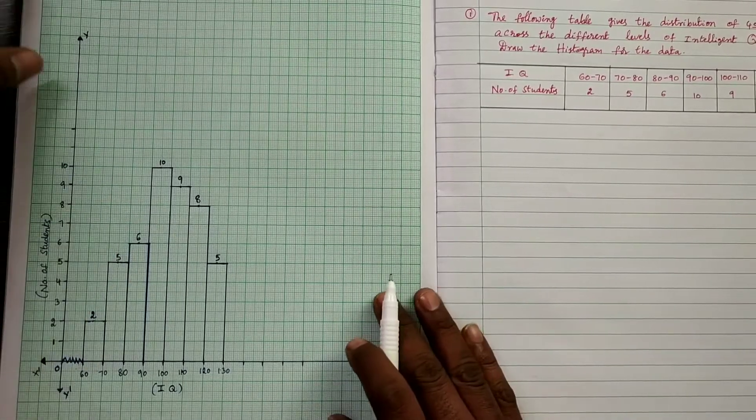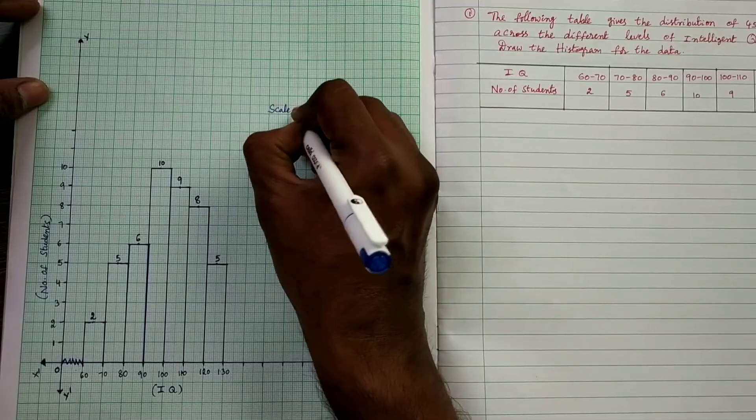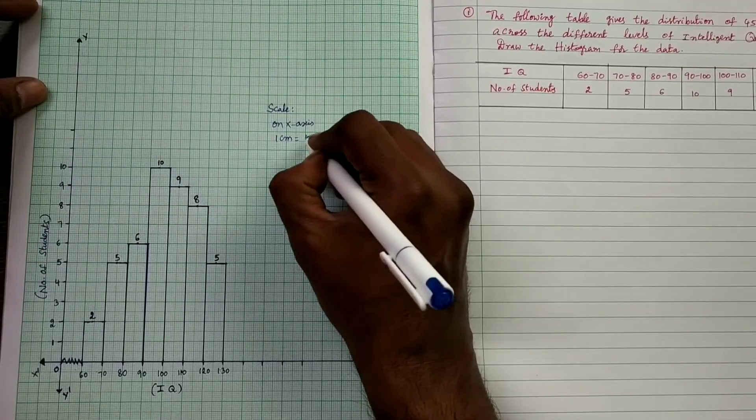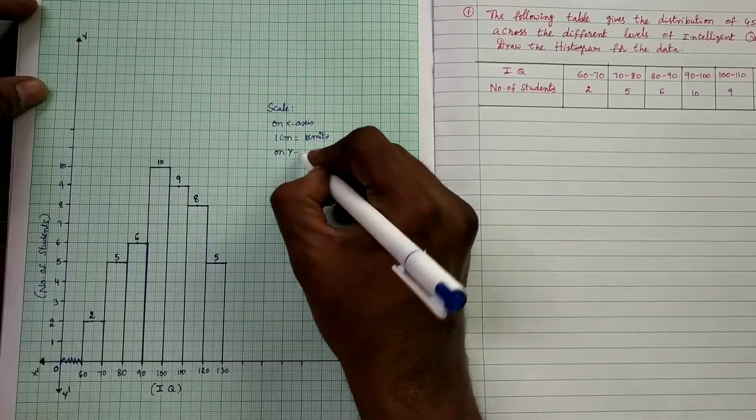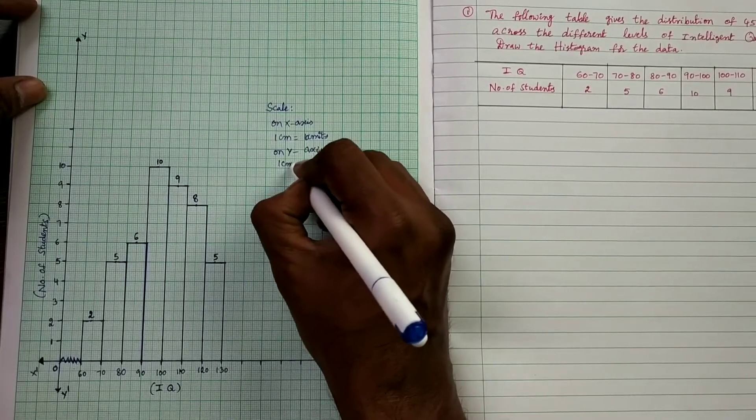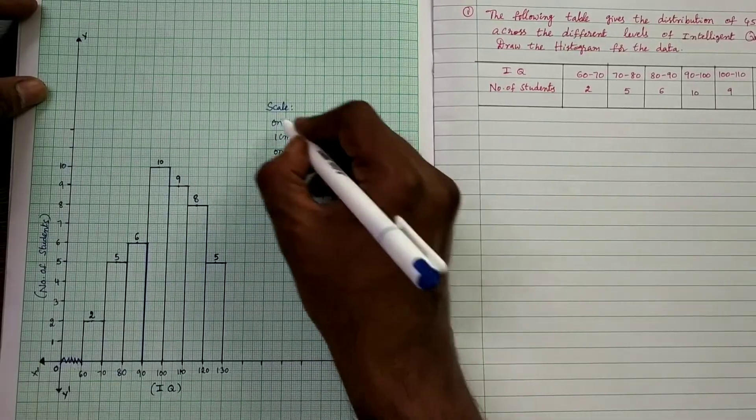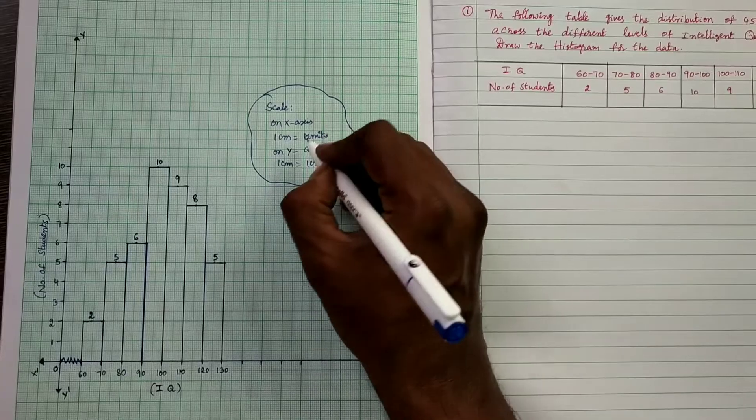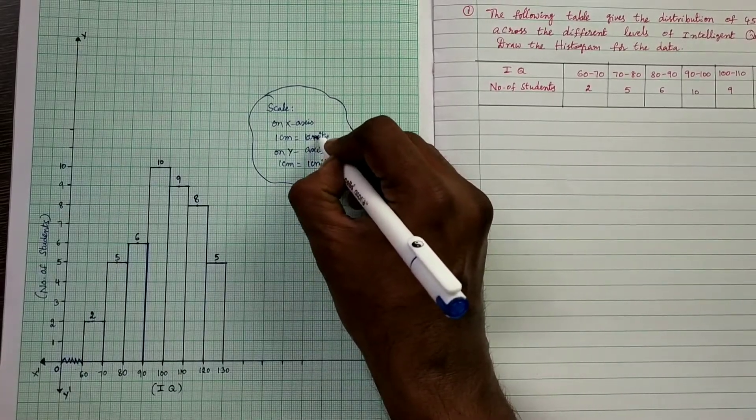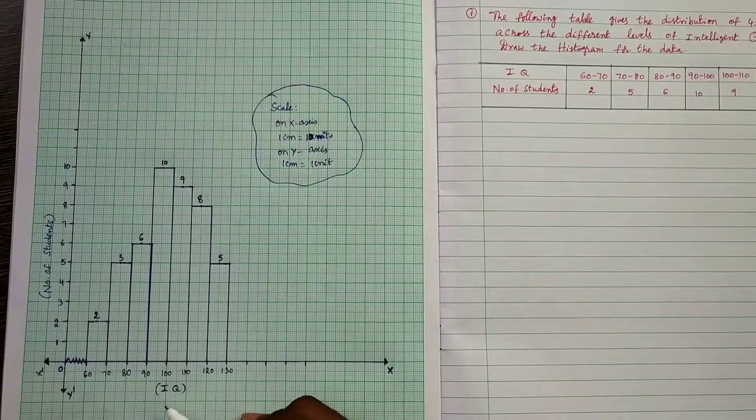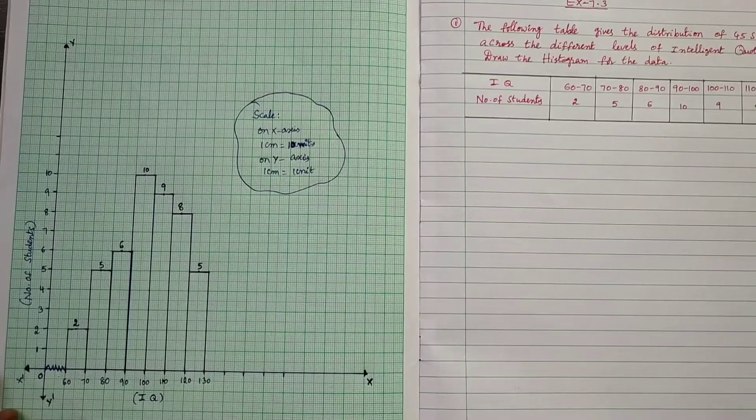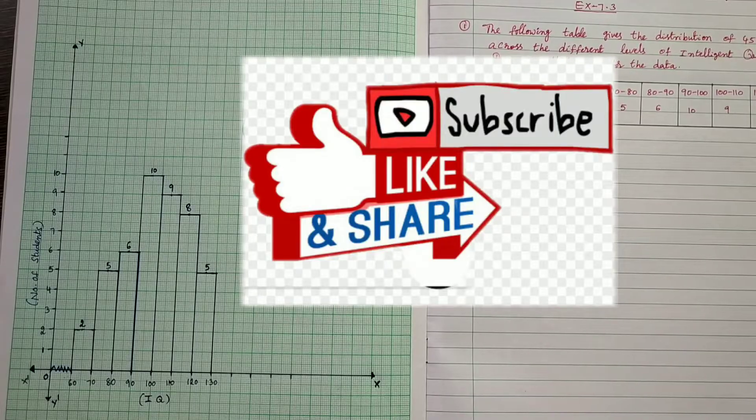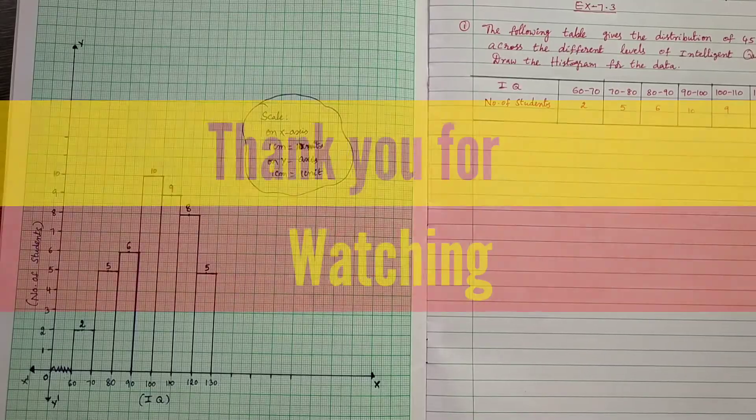The construction is, write the scale. On x-axis, 1 cm is equal to 10 units. On y-axis, 1 cm is equal to 1 unit. This is the scale. On x-axis, 1 cm is equal to 10 units. On y-axis, 1 cm is equal to 1 unit. So this is the required graph of the given data. If you liked this video, please like it and share it to your friends or classmates and subscribe for more videos. Thank you for watching.